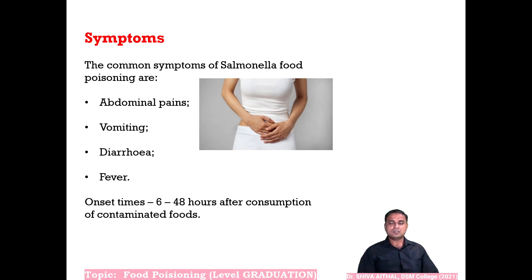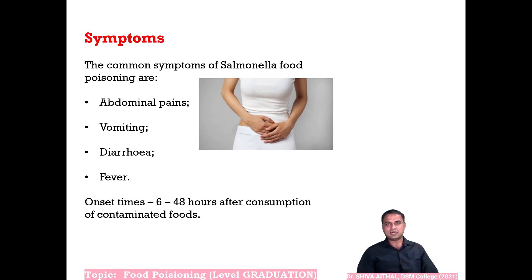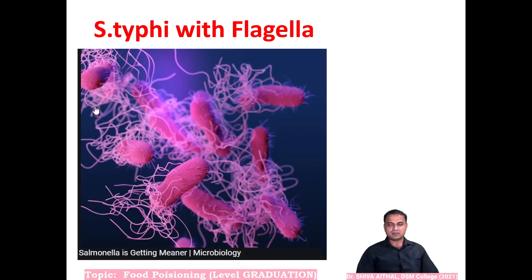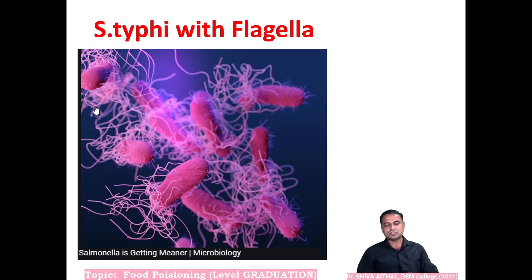Salmonella shows common symptoms regardless of species: abdominal pain, vomiting, diarrhea, and fever, occurring 6 hours to 48 hours after consumption of contaminated food. Salmonella is a gram-negative bacillus, 1–3 microns in length and 0.5 microns in width, motile by peritrichous flagella. In electron microscopy, Salmonella typhi can be seen with flagella, which are antigenic in nature. The bacterium is reportedly becoming 'meaner,' developing antigenic characters that resist antibiotics and the immune system.